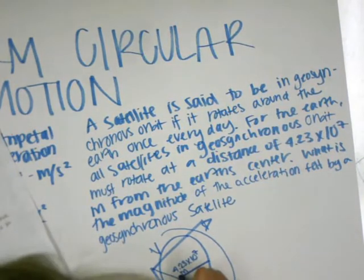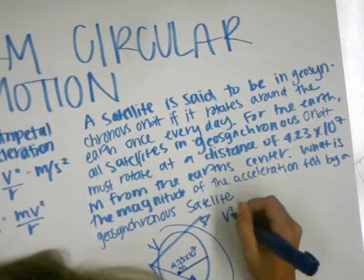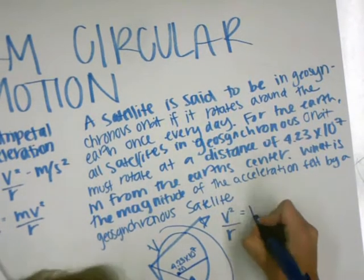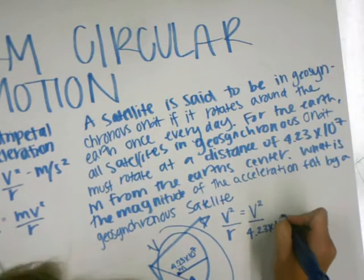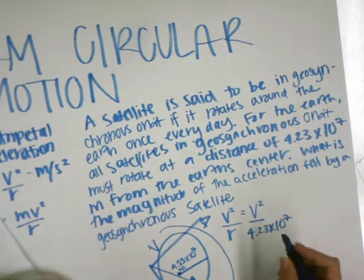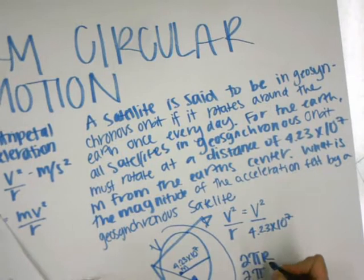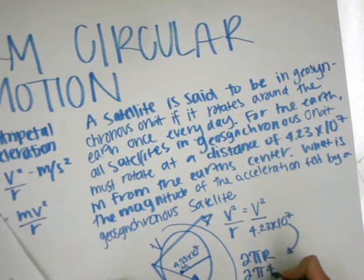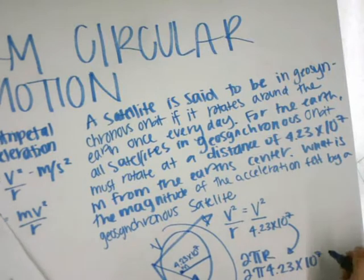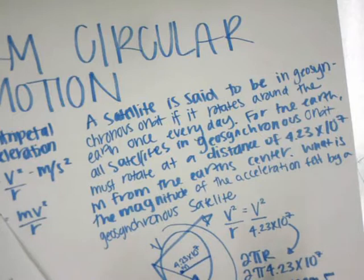So, to find acceleration, it's V squared over R, and we get V squared over 4.23 times 10 to the 7. Then V equals 2 pi R divided by the period, and we can substitute this in. When we calculate that, we get this number. Then we divide by 24 hours from Earth's rotation, times this to get that number in seconds.